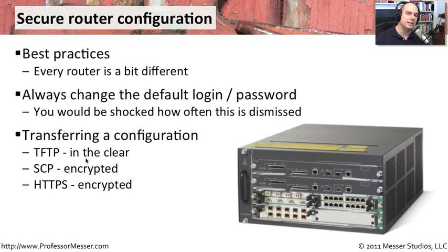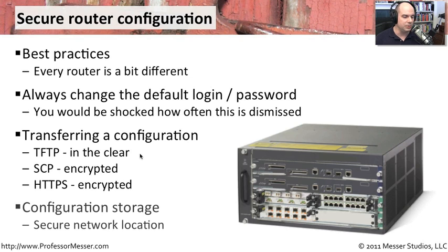TFTP — probably not so much. That is cleartext traffic. If somebody wanted to see the configuration files that you're transferring via TFTP, all of your very sensitive security information would be in there — all of the information you added for IP address ranges and the different resources available. If you got your hands on a firewall, a router log, or a router configuration, there's a lot of good information in there that bad guys would be able to use.